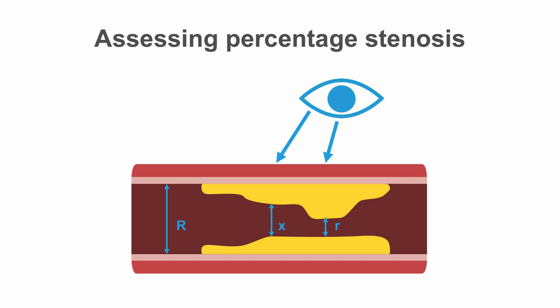On this diagram, the diameter of the lumen, small r, should be expressed as a percentage of the reference vessel diameter where it appears normal, large R, rather than in the adjacent disease segment, x. This can be difficult if the vessel is diffusely diseased throughout.